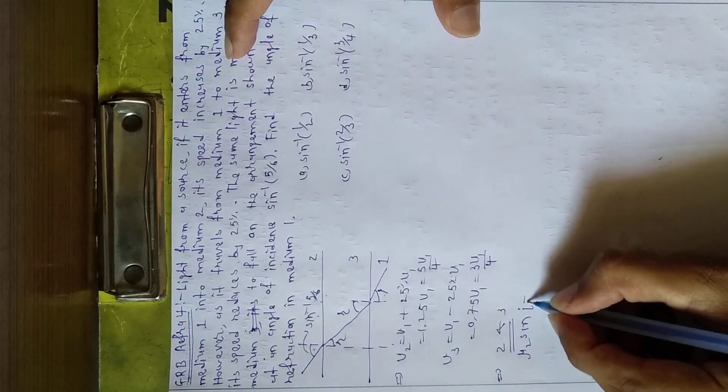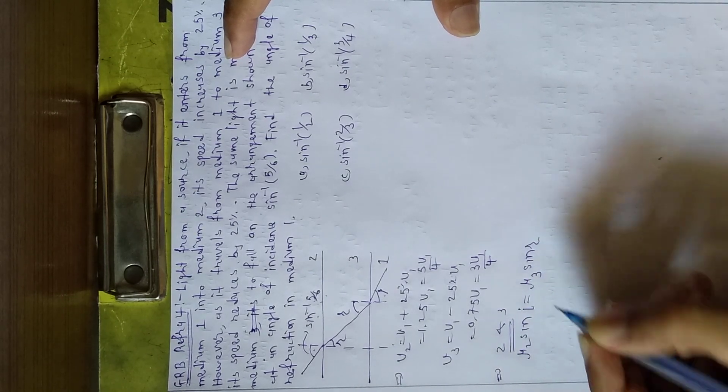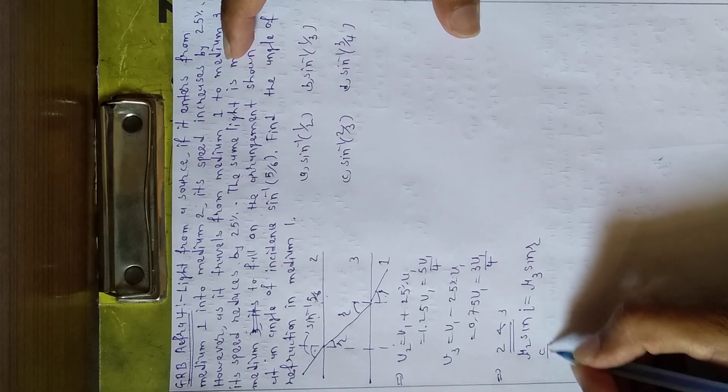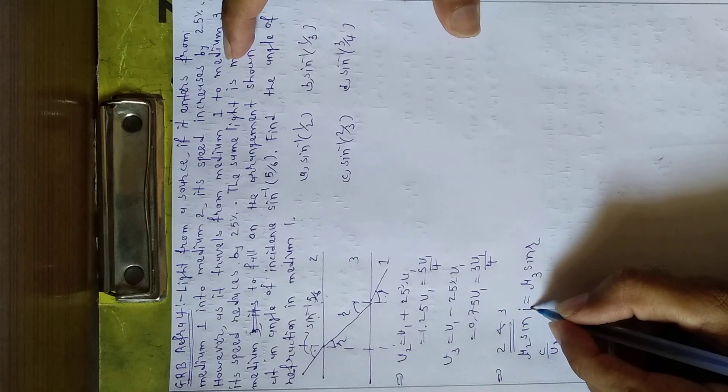equals mu 3 sin r. Mu 2 equals c by v2, sin i equals 5 by 6. Mu 3 equals c by v3.